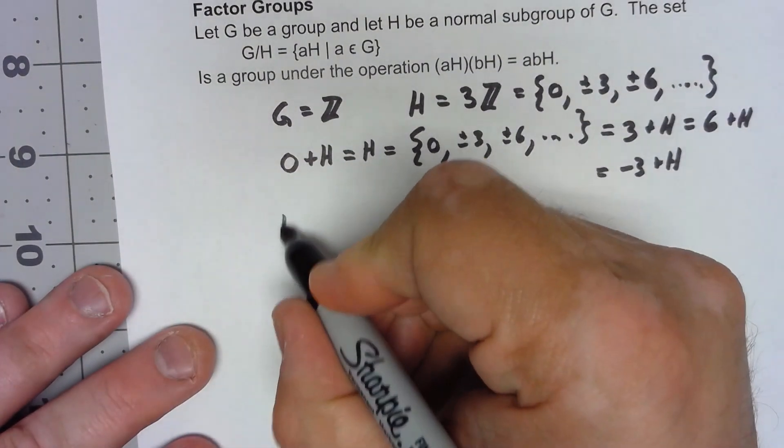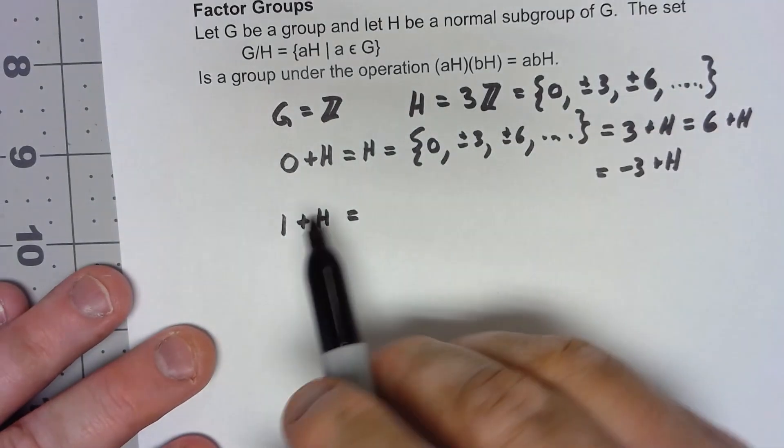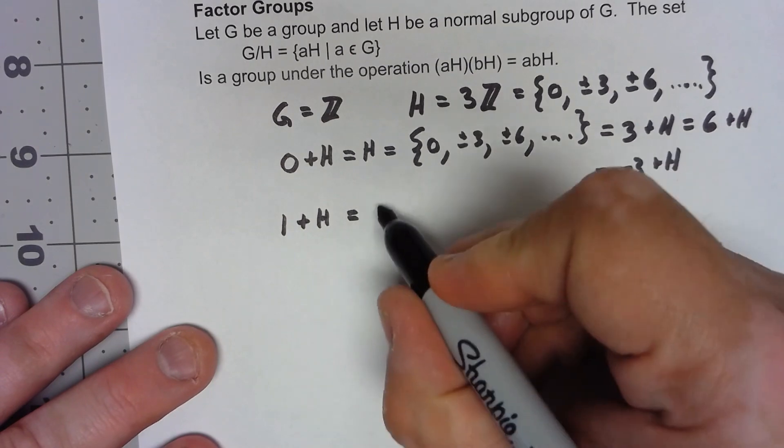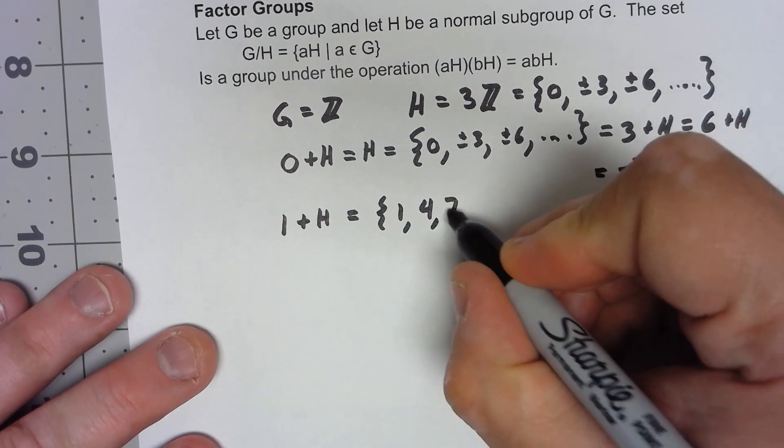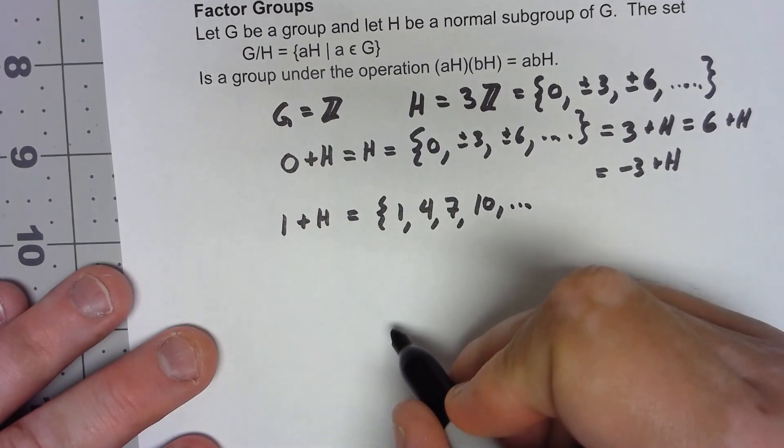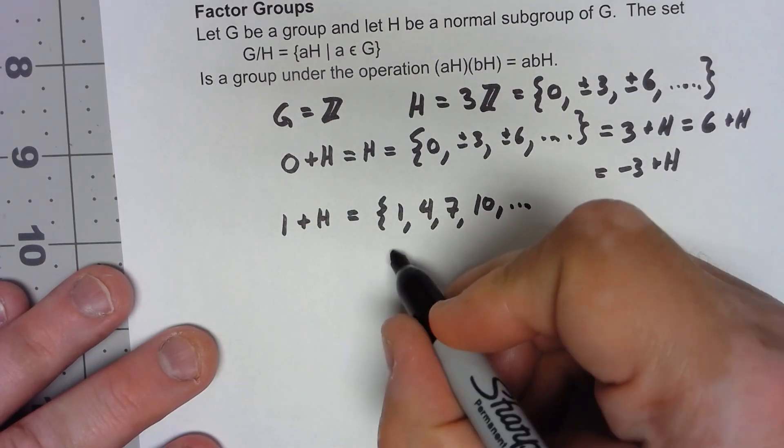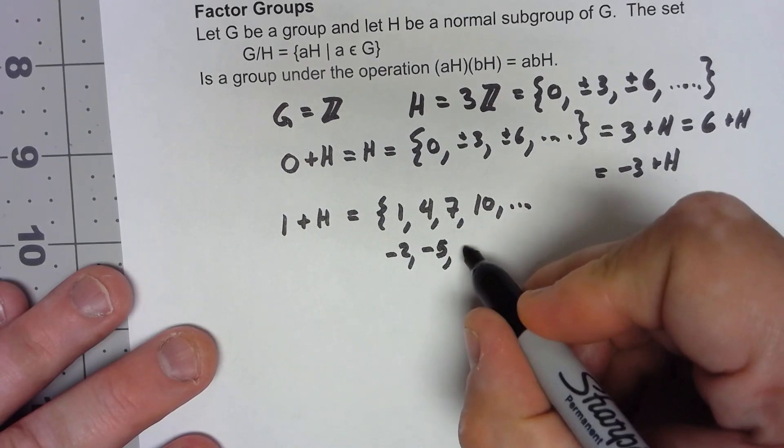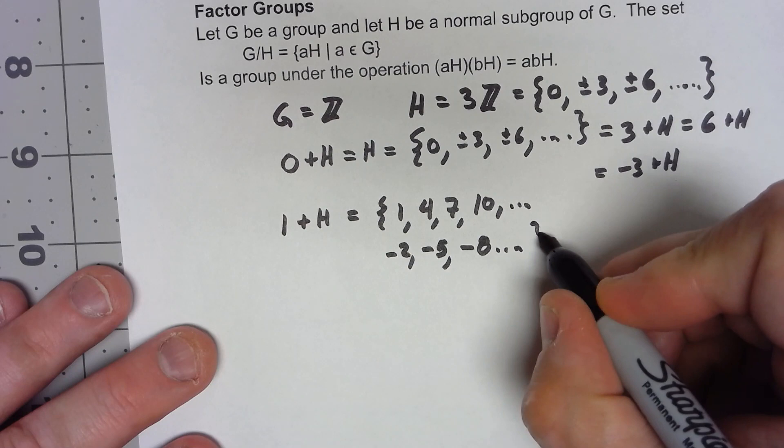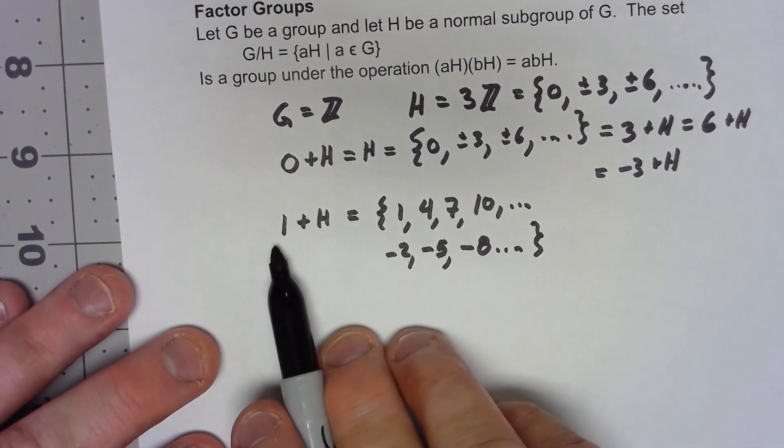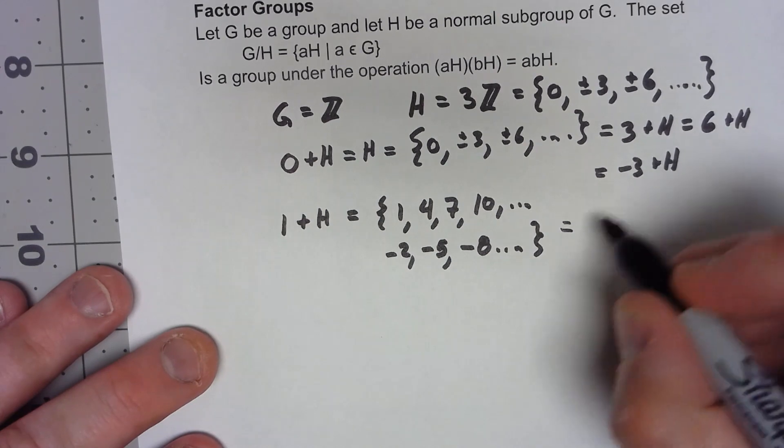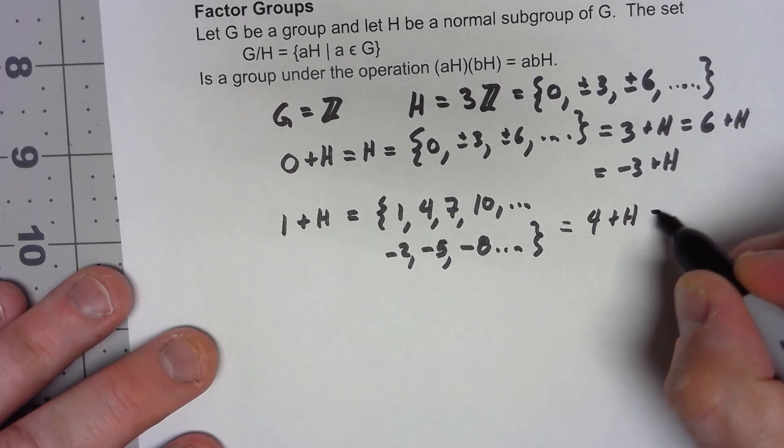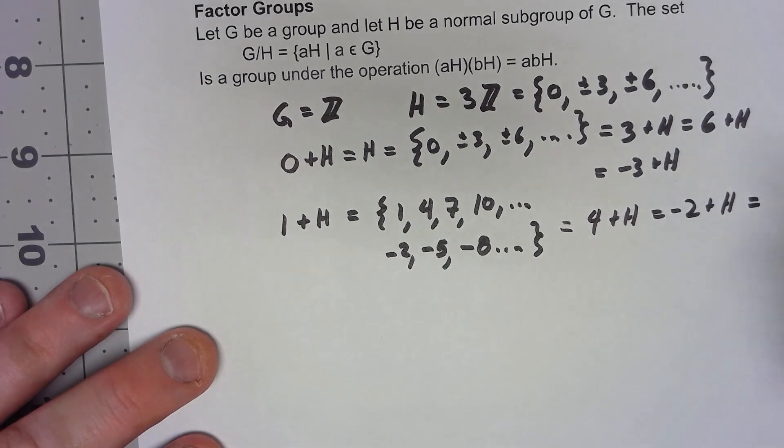Another one is 1+H. So we start adding 1 to all the elements in H. We get 1, we get 4, we get 7, we get 10. We also get, if I look at the negatives, we're going to get -2, -5, -8, and so on like that. And once again, if I take any element of this and add it to H, I'm going to get the same thing. So this is the same as 4+H, it's the same as -2+H, it's the same thing as 31+H.